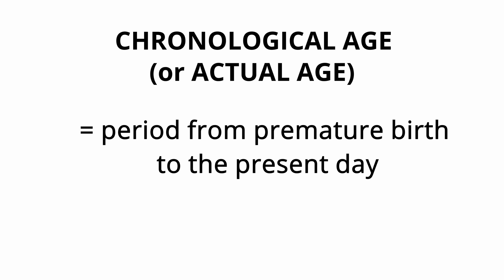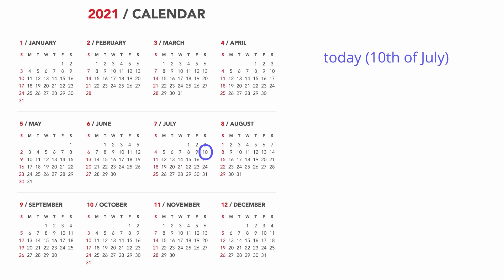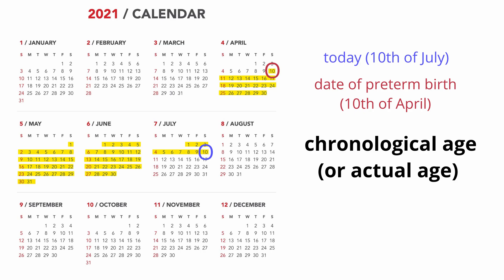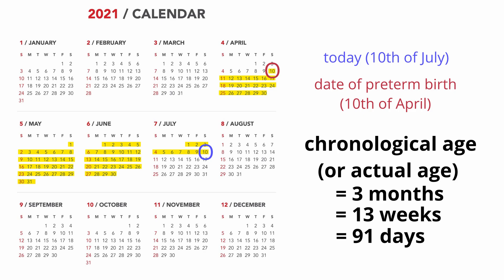There are a few terms you need to know. First is the chronological age or actual age. This is the period from premature birth to the present day — the period that a child is in the world from the day of his early birth until today. Let's say today is the 10th of July and you gave birth to a preemie on the 10th of April. So the chronological age or actual age is 3 months, which is 13 weeks, which is 91 days.